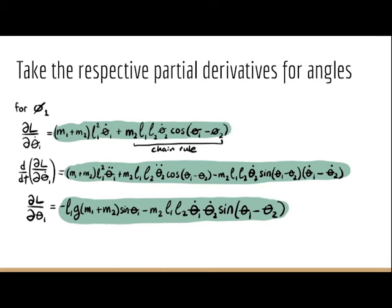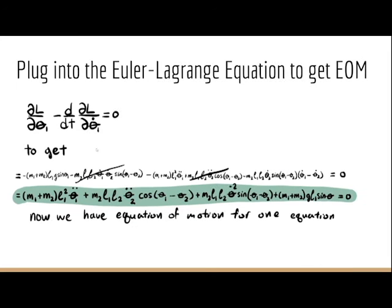As you can see here, I took the d/dt of partial L over partial theta dot and then it gets me that equation, the second one. Then I also took the partial L over partial theta 1 to get another equation that's used for the differential. Once we put them together, we would get one of our first equations of motion for the first angle theta.